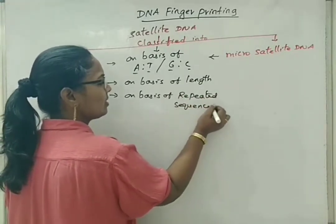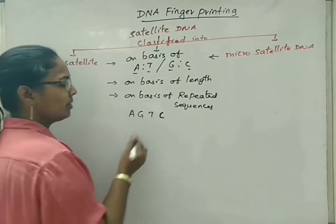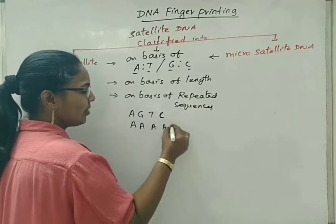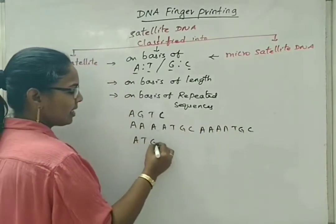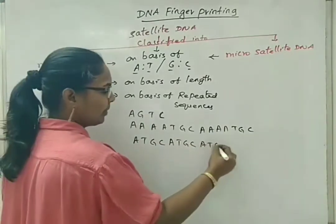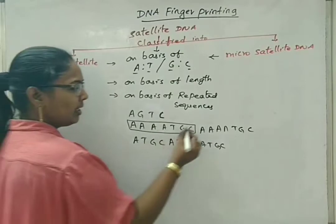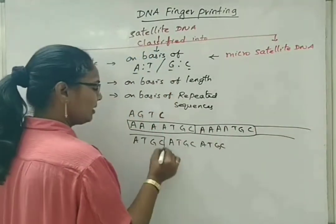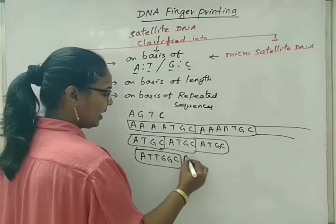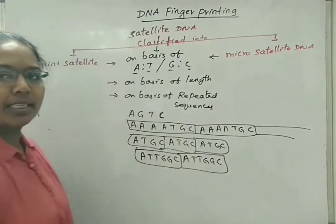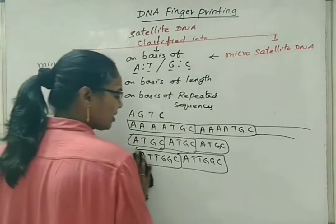What is meant by repeated sequences? We know we have only four different types of nitrogen bases: adenine, guanine, thymine, and cytosine. In satellite DNA, these can be arranged in a pattern — for example, A-T-G-C — and this sequence is repeated again and again. In satellite DNA, the nitrogen base sequences are repeated many times, and that decides the total function of satellite DNA.